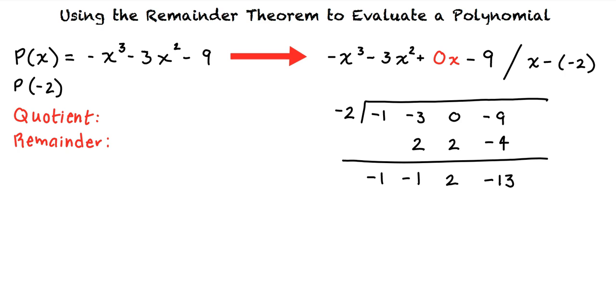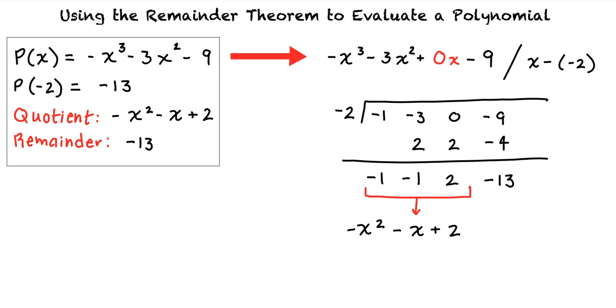What does this final row of numbers mean? The final number in the row is the remainder, and the rest of the numbers in the row are the coefficients in descending order of a polynomial whose degree is 1 less than the dividend. This means that our quotient is negative x squared minus x plus 2, and the remainder, p of negative 2 equals negative 13. And this is our final answer.